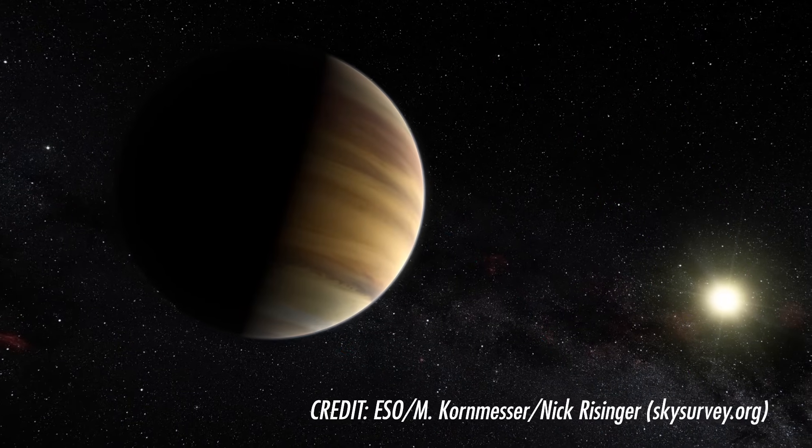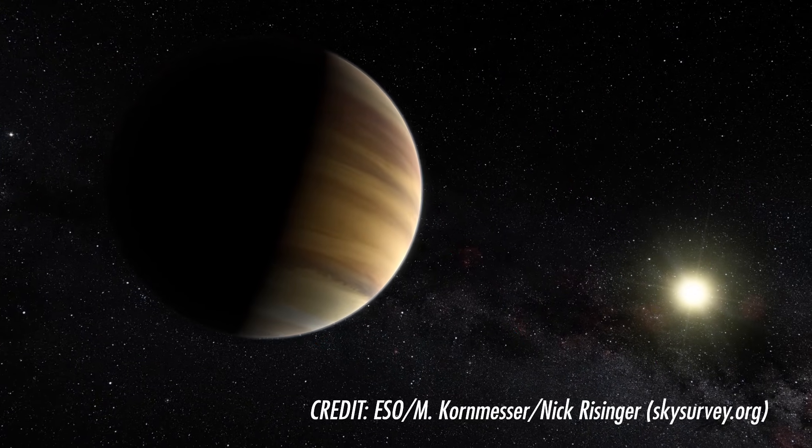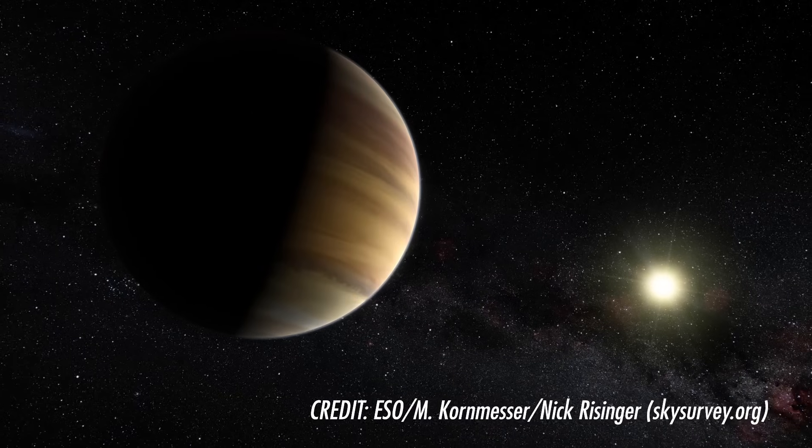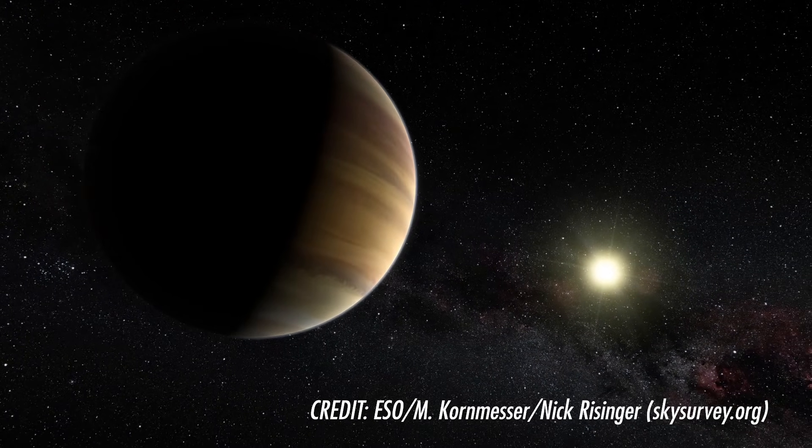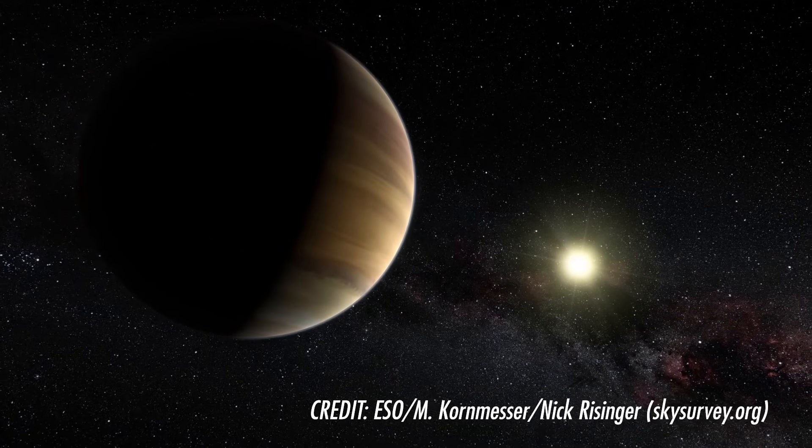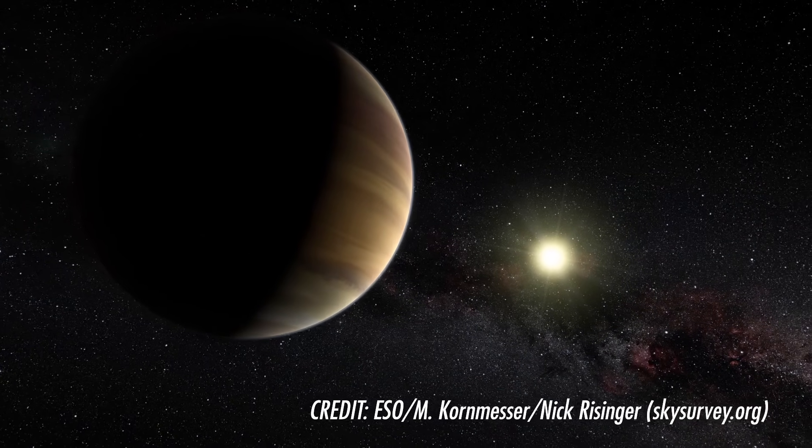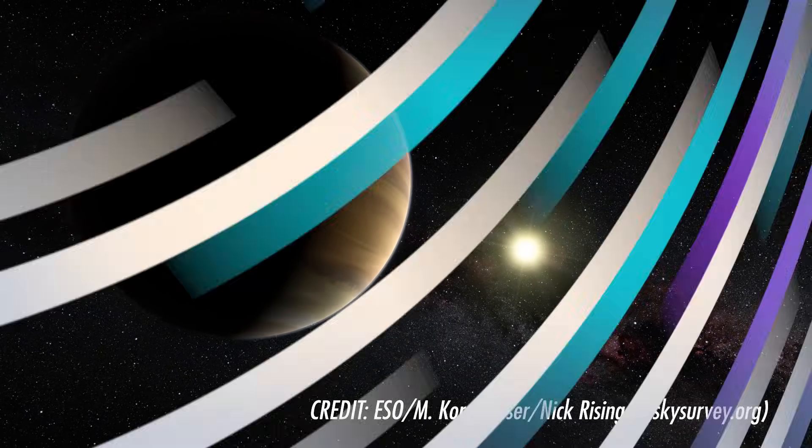And the planet they found, called 51 Pegasi b, is weird. For one thing, the orbital period turns out to be just a little over 4.23 days. That's right, I said days. That means the planet is seriously close to its parent star, just 8 million kilometers out. Compare that to Mercury, which on average is 55 million kilometers from the Sun.